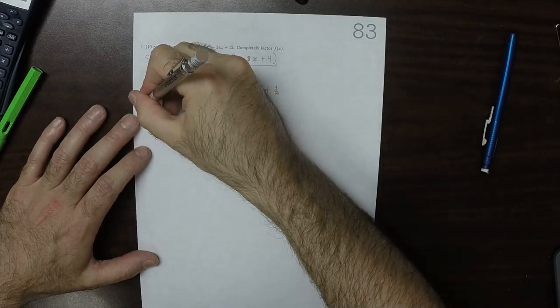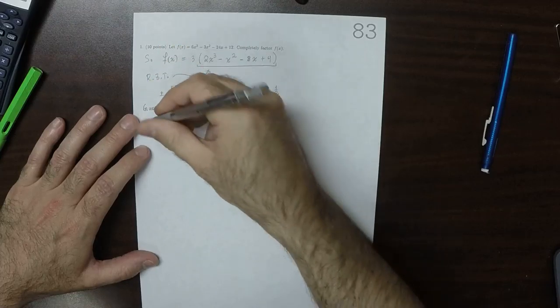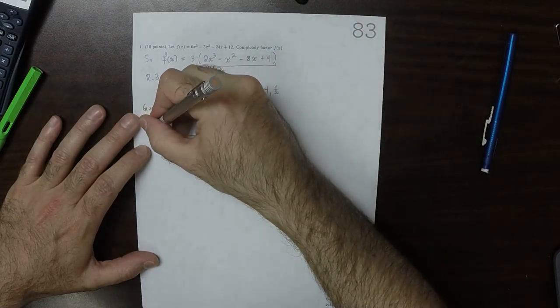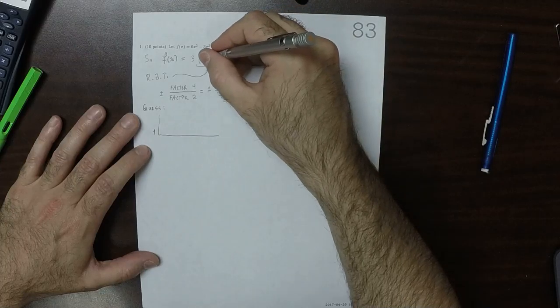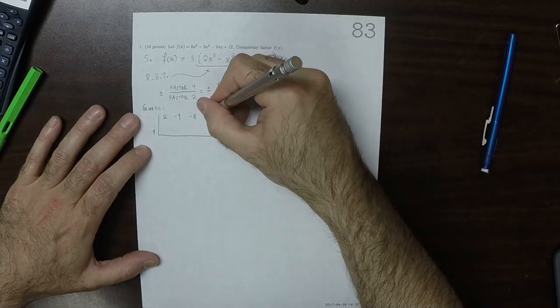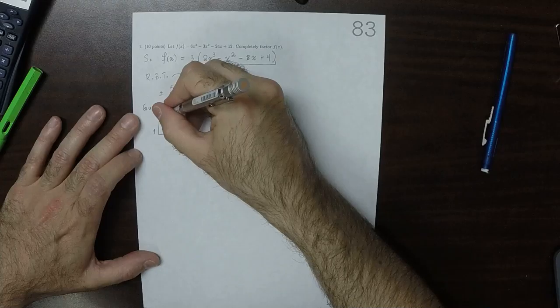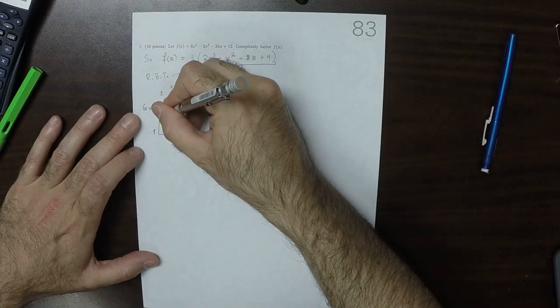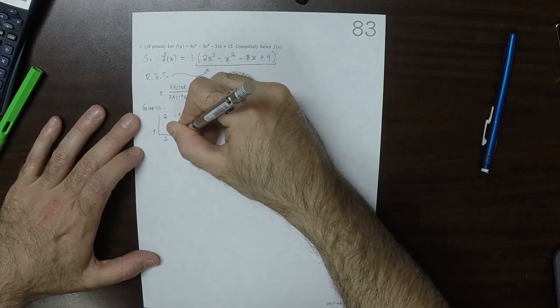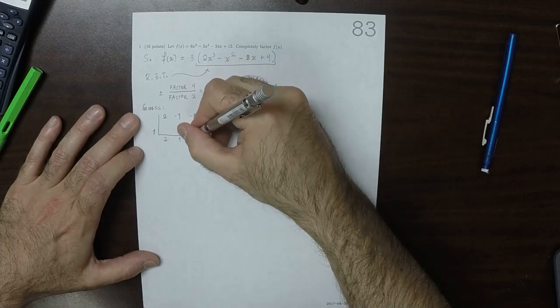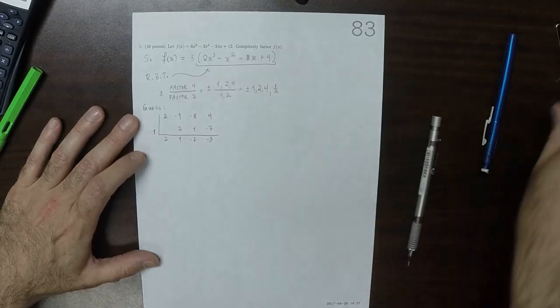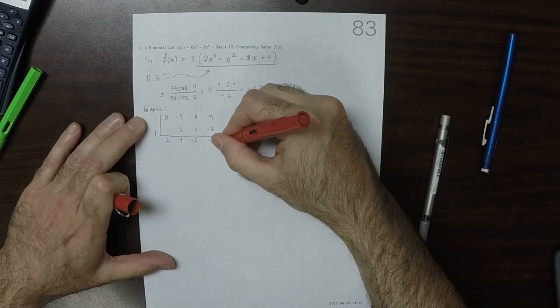So now we start guessing. So it will be good to pick easy ones first. So I'll pick 1 first, 2, negative 1, negative 8, 4. Okay, so I'll guess 1, so then that'd be carry down the 2, and then multiply, add, multiply, add, multiply, add. So that's not a 0, so that didn't work.